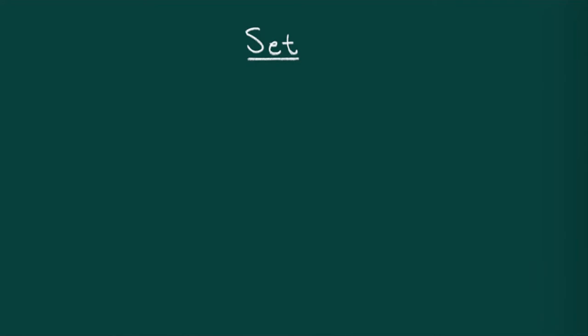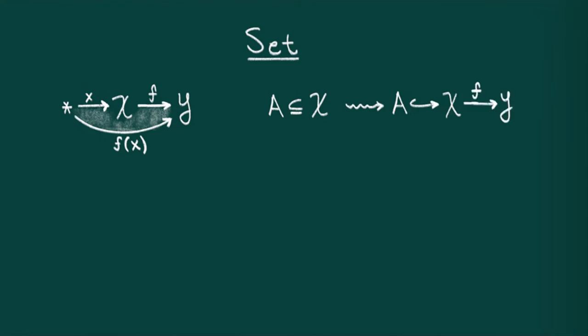Next, let's say I have a map from x to y and an element of x, i.e. a map from a point to x. As these two maps are compatible, I can compose them. This gives me a point in y conventionally referred to as f of x or f evaluated at x. More generally, I can think of a subset a of x as a map by including a into x. I can then compose this map with f obtaining the restriction of f to a.